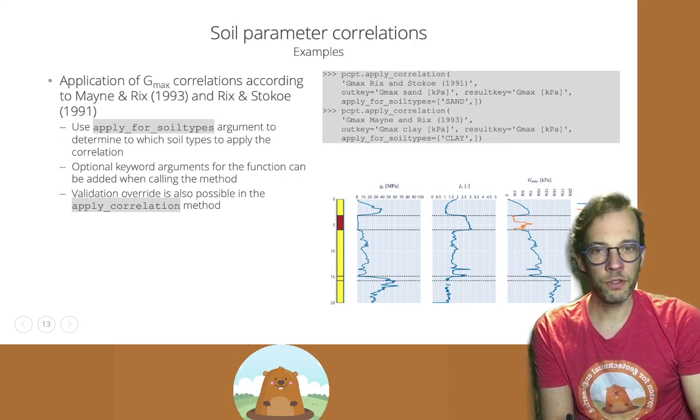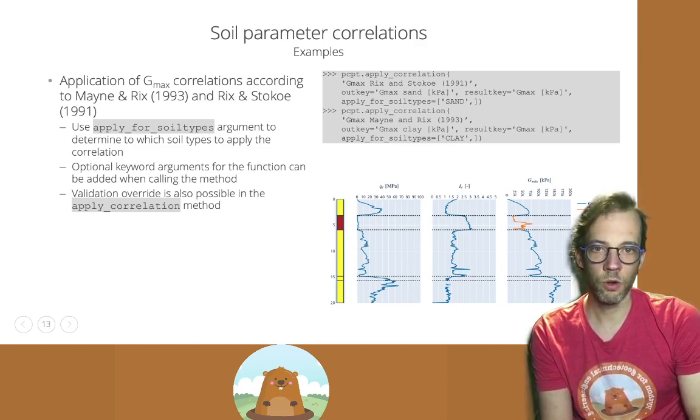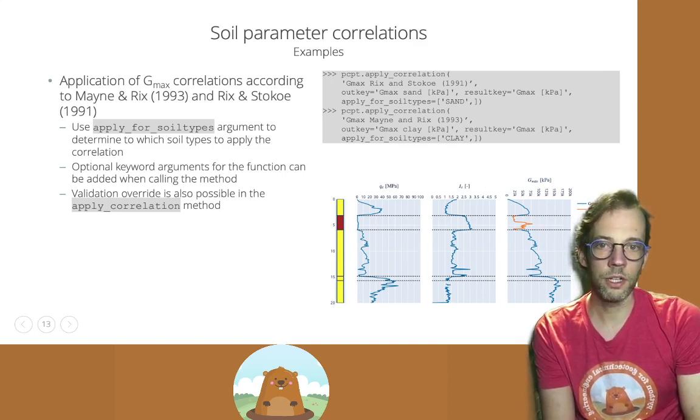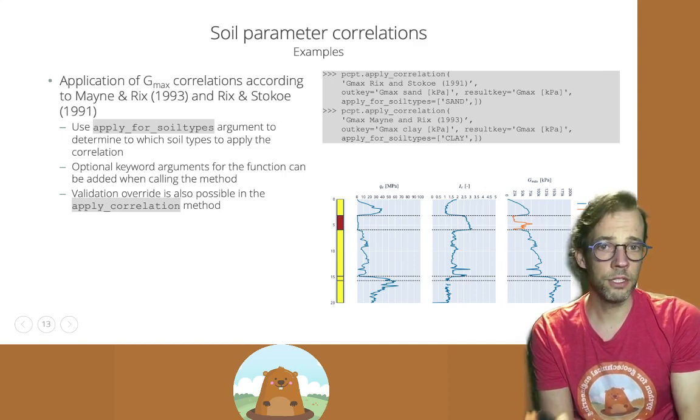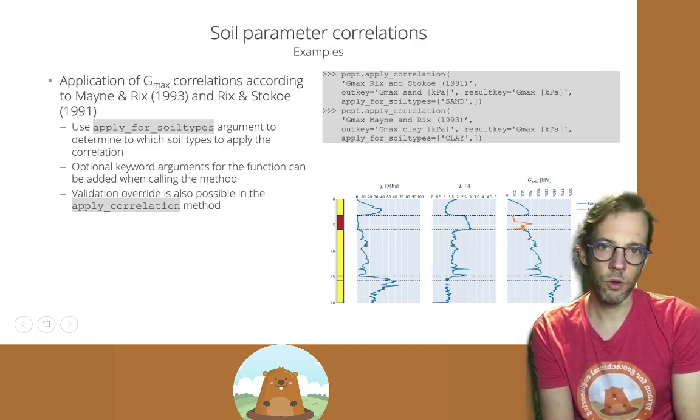If you want to further customize your function calls, you can supplement apply correlation with the keyword arguments for the function used in the correlation. So for instance, if you have a k0 argument, as certain relative density correlations do, you can simply specify that optional keyword argument in the apply correlation method.